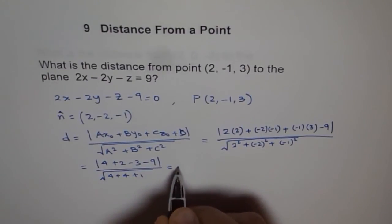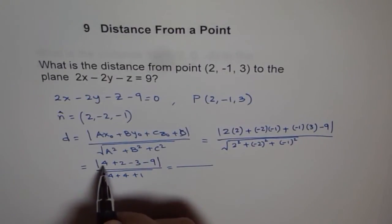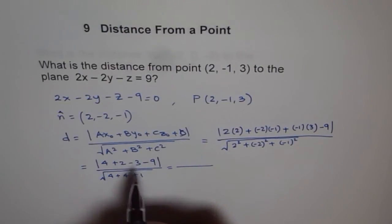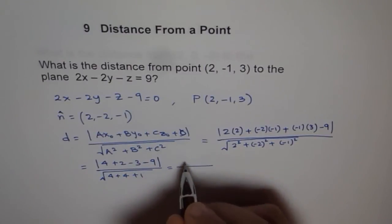That gives us 4 + 2 - 3 - 9. This gives us -6.